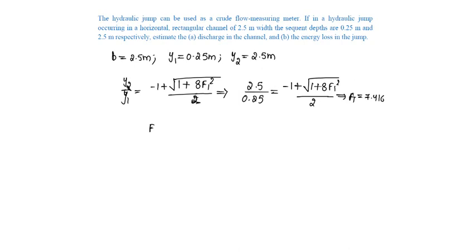We know F1 is equal to v1 by root g y1. For a rectangular channel, since a by t is y, v by under root of g into a by t becomes v by under root of g into y.